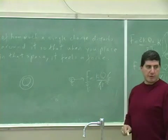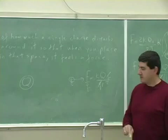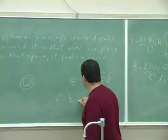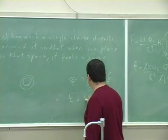The little q drops out. And so you get k big Q over r squared. So the electric field is k big Q over r squared.